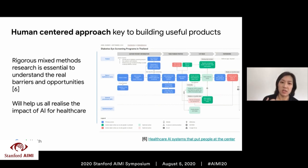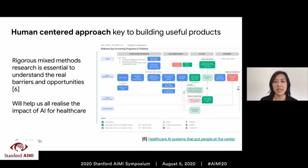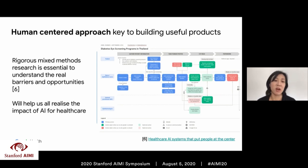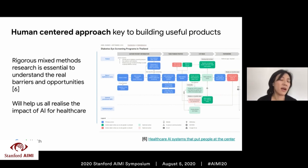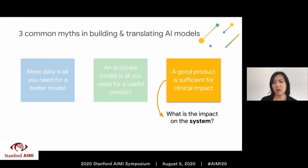We published a methodology in CHI proceedings covering product functionality and potential workflows. One interesting finding was that some patients didn't want to get screened because they were worried they'd have to take additional time to visit another clinic that was too far for them. Some folks just didn't want to know they were sick because, even if they were, they wouldn't have time or means to go to a central hospital. This brings me to the third myth: even a good, usable product is sufficient for clinical impact, because there are a lot of systemic factors.